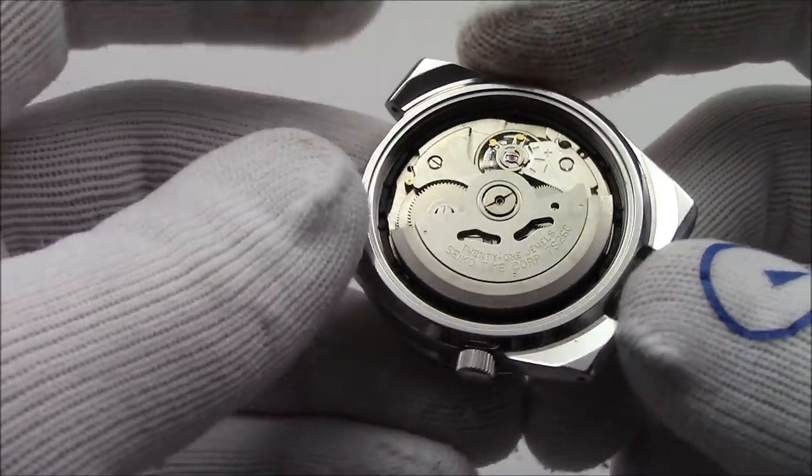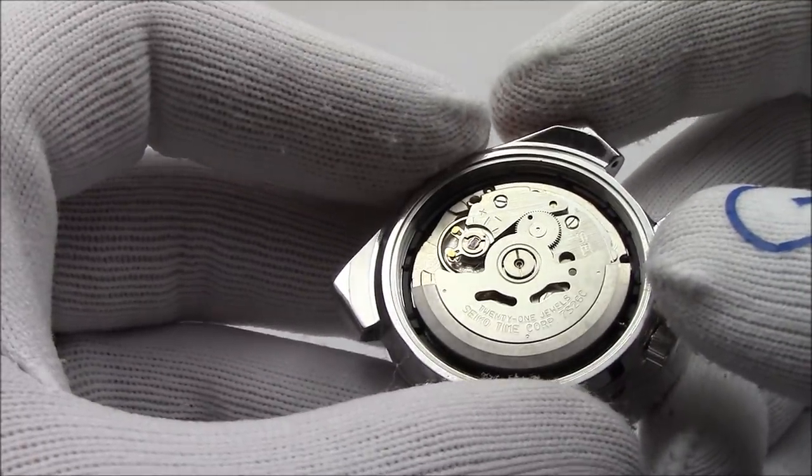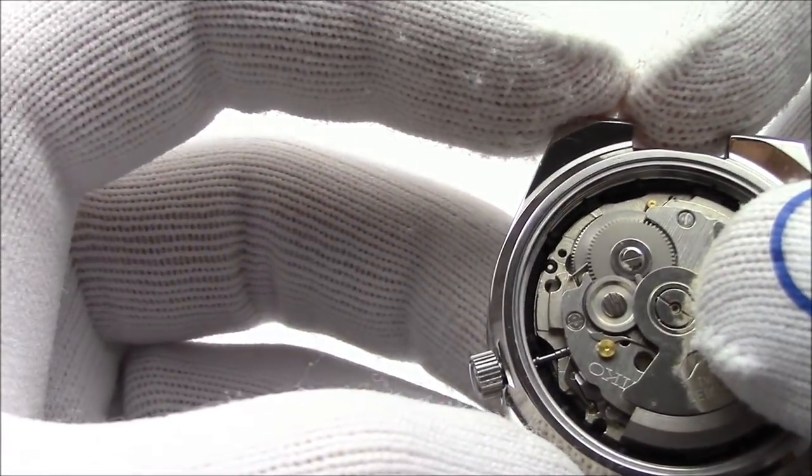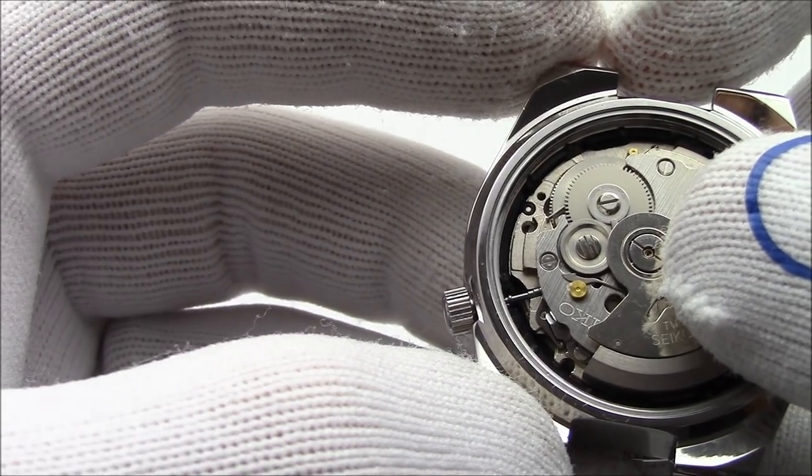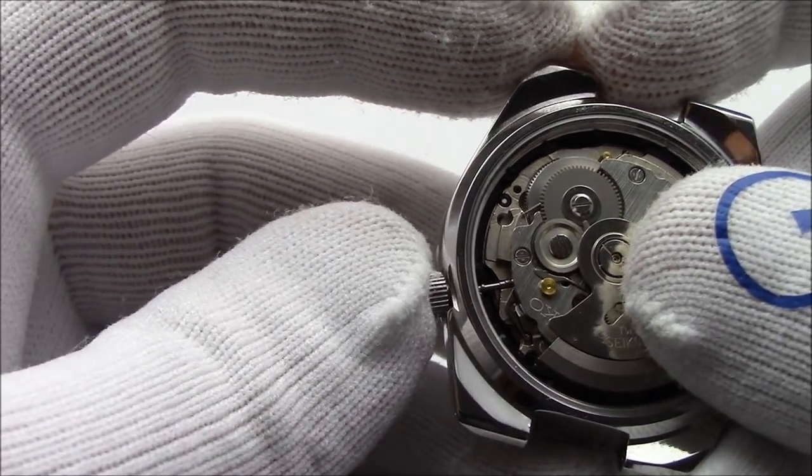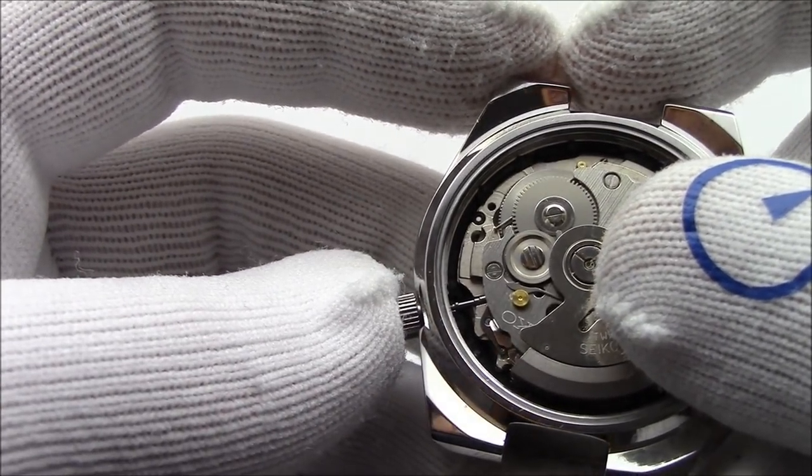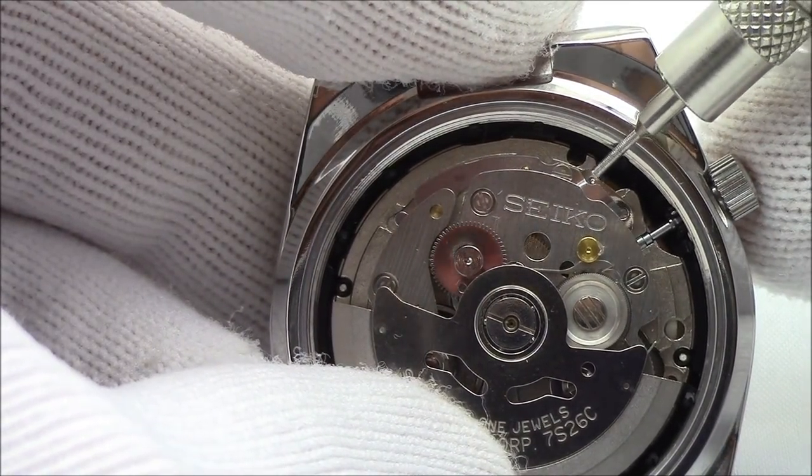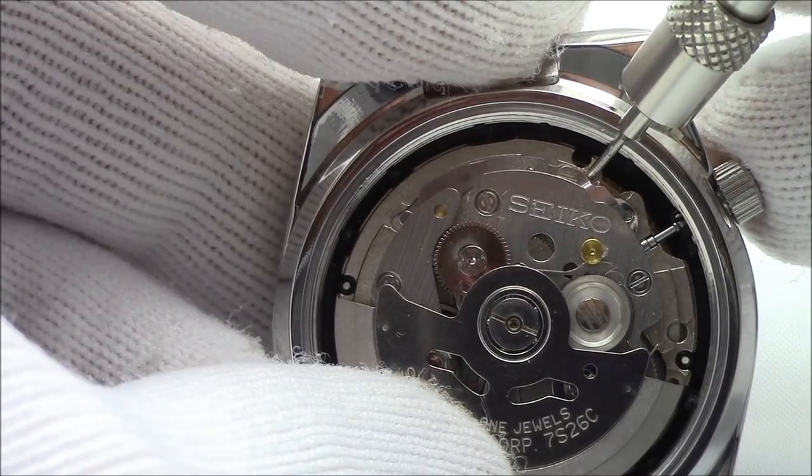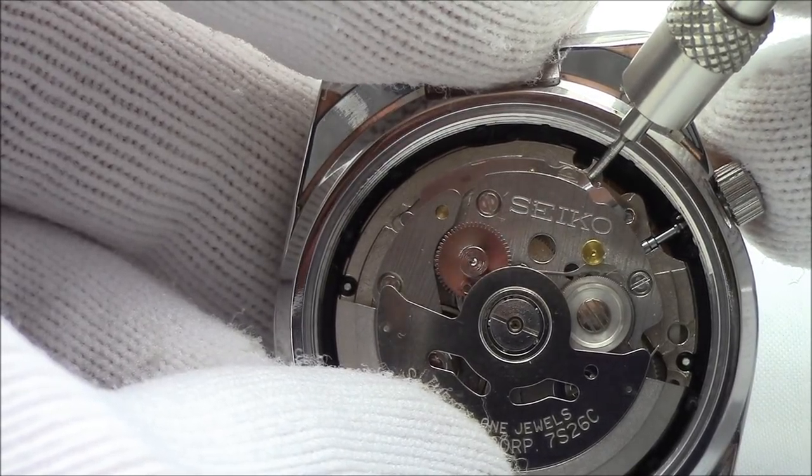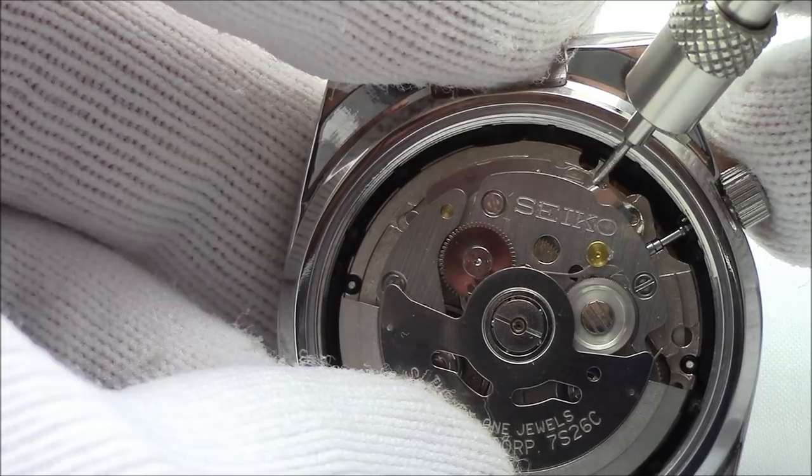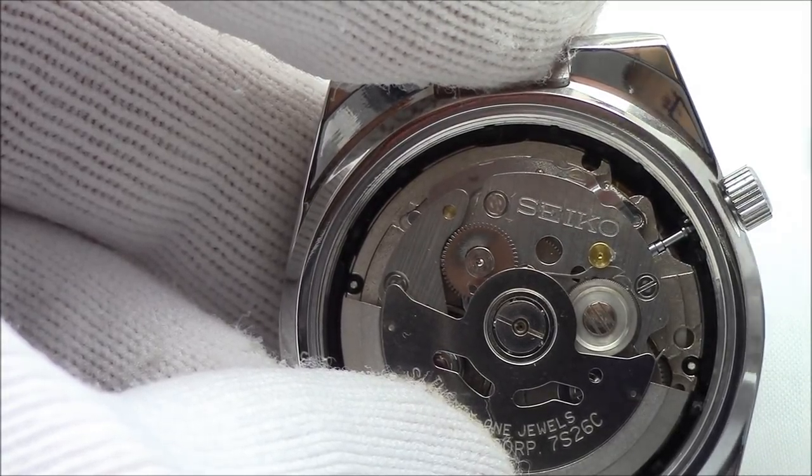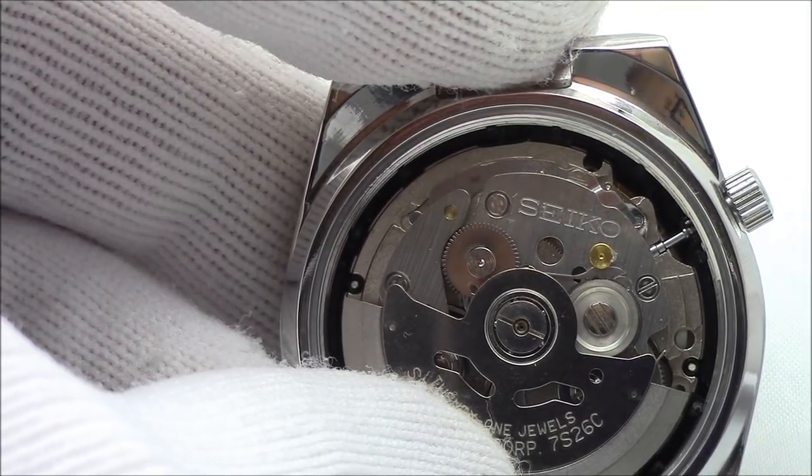So now what we have to do is we have to remove the crown and stem, and then we'll be able to take everything out of the watch. And I believe I might have shown this on a prior video also. For this Seiko, all we need to do is make sure the crown is seated all the way. So if you look right here, there's a little nib right here. You push that down with a tool, screwdriver, anything hard and small that you can get in there with. And at the same time, push down very gently and pull out the crown, and the crown will release.